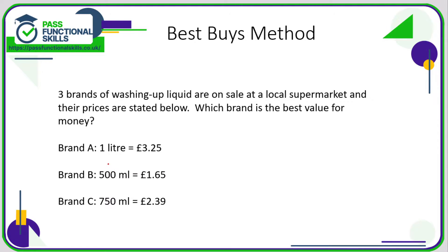Here we're comparing some washing up liquid in various sizes. This is quite a tricky one because of the 750 milliliters. It's easy to compare Brand A and Brand B because 500 milliliters is half a liter — I can compare them by either halving the £3.25 or doubling the £1.65 and making a cost comparison. But the 750ml causes a bit of a problem. It might be easier to think of one liter as 1000 milliliters.